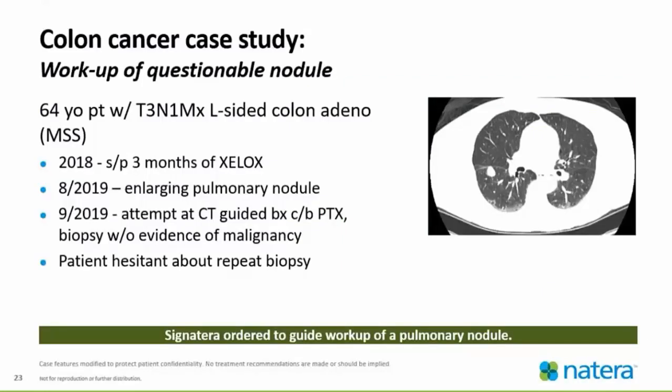This is the colon cancer case study — working up a questionable nodule. A 64-year-old patient presents with a T3N1 left-sided colon cancer and MSI stable. In 2018, patient status post three months of XELOX. On follow-up imaging in August 2019, there was an enlarging pulmonary nodule noted on the chest CT. In September, a CT-guided biopsy was attempted but showed no evidence of malignancy. The patient was hesitant about having another repeat biopsy, so the provider ordered Signatera to guide further workup of this pulmonary nodule.